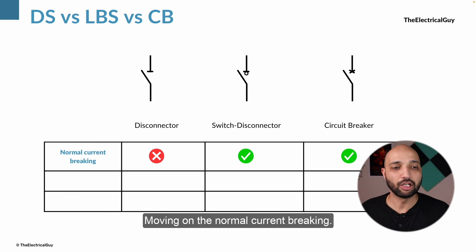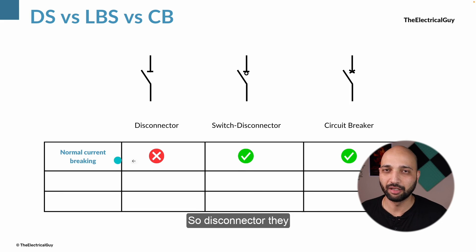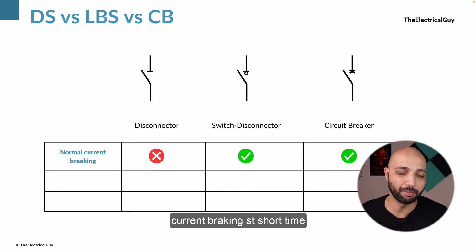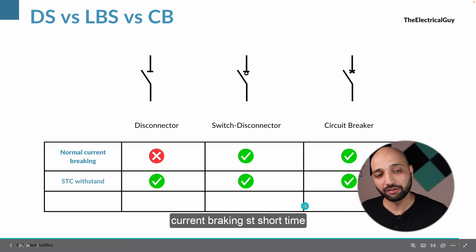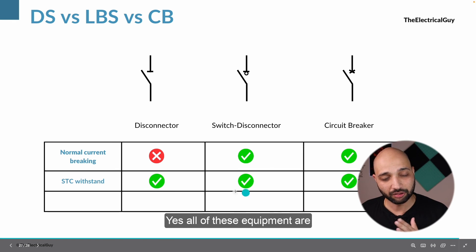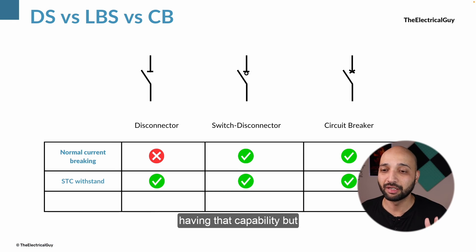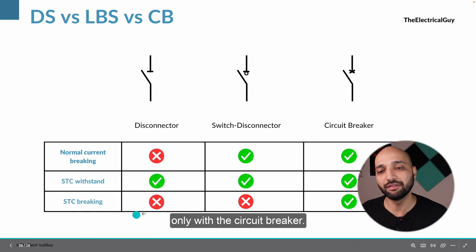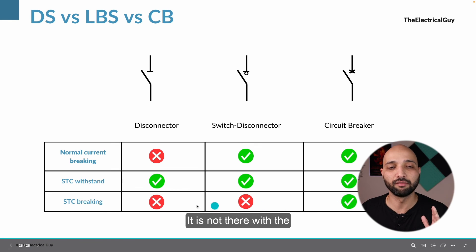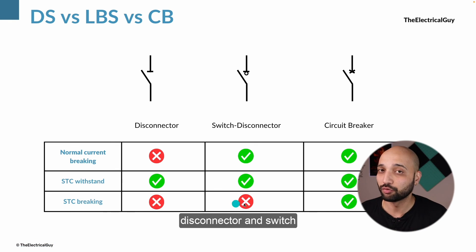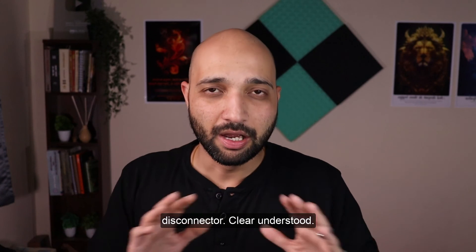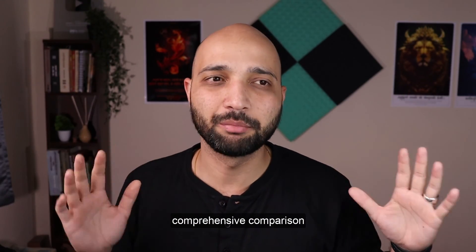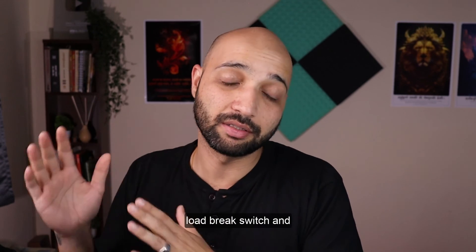On normal current breaking: disconnectors are not capable, while switch disconnectors and circuit breakers both can perform normal current breaking. For short-time current withstand capability, all three devices have this capability. However, the breaking capacity for short circuit currents is only available with the circuit breaker — it is not present in the disconnector or switch disconnector. That completes the comprehensive comparison between disconnector, load break switch and circuit breaker.